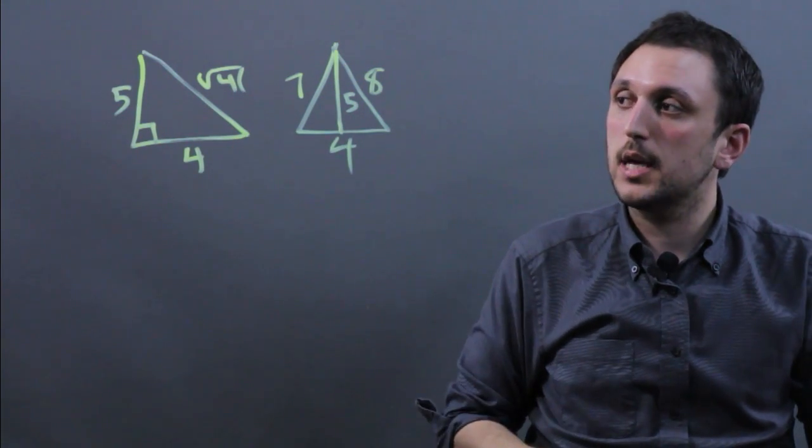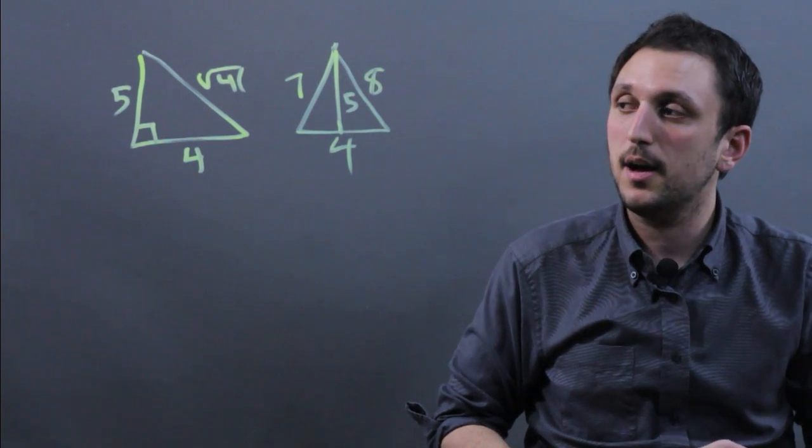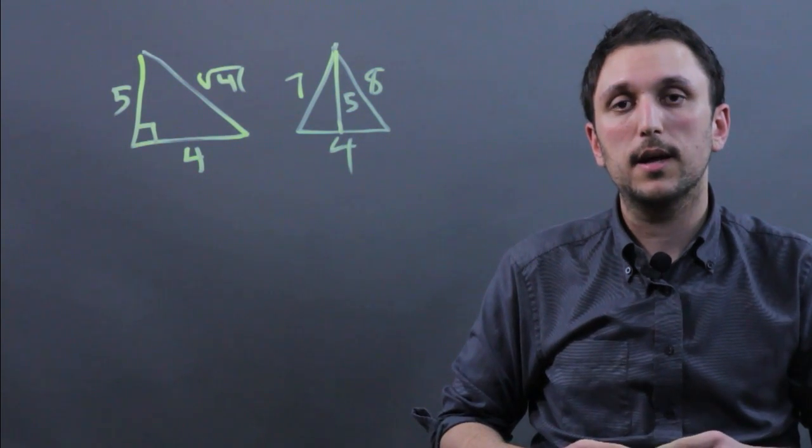So I'm Charlie Kasov, and you just learned that two triangles with the same base and height can still not be congruent. Thanks a lot.